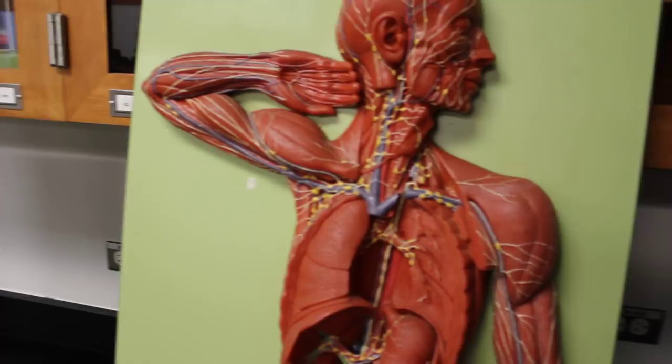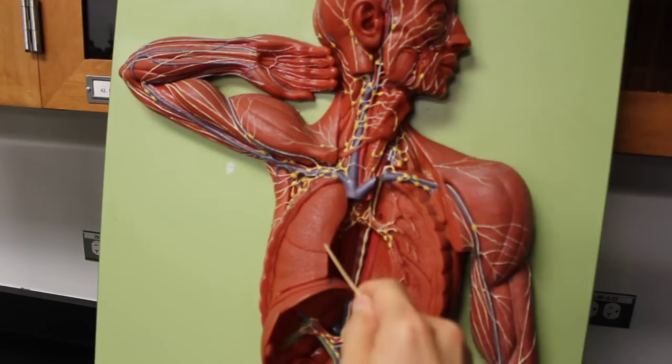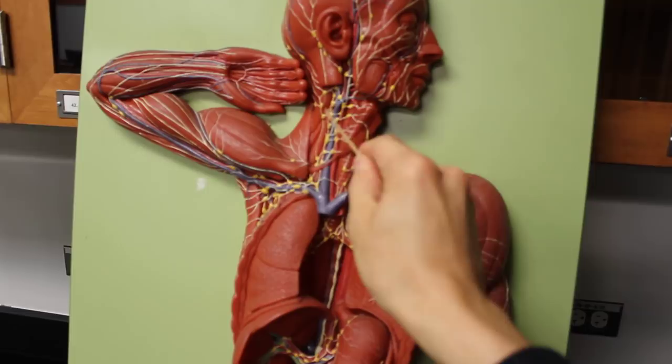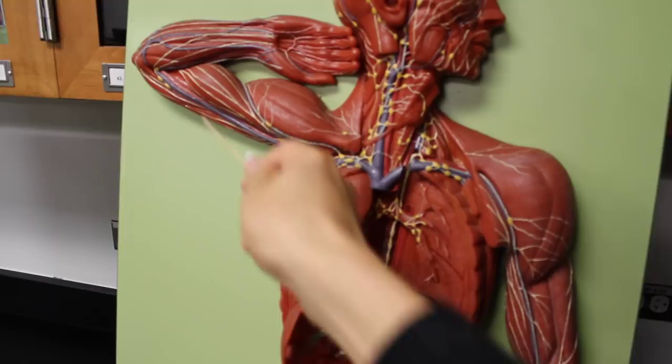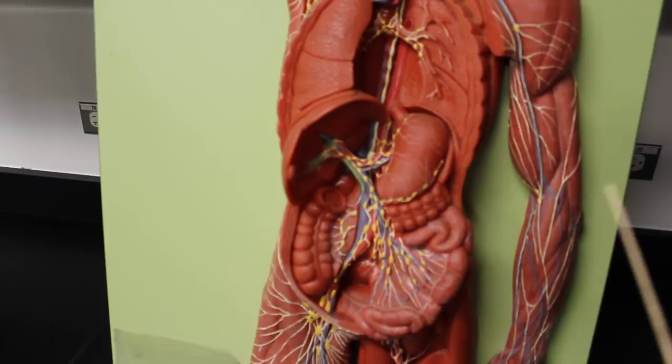They all pour into, depending on what side you're on. If you're on the right upper side of the body above the diaphragm, you pour into what we call the right lymphatic nodes, and that's what these yellow structures are. They're just named according to the regions: cervical lymph nodes, axillary lymph nodes, brachial lymph nodes, inguinal lymph nodes, intestinal lymph nodes. They're all named according to the region that they're describing.